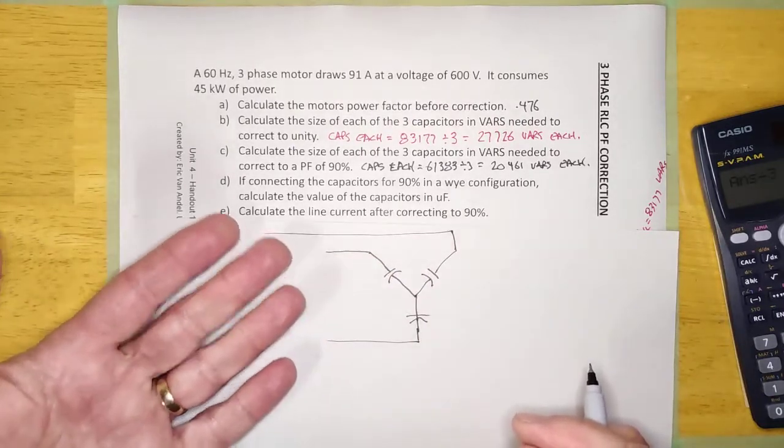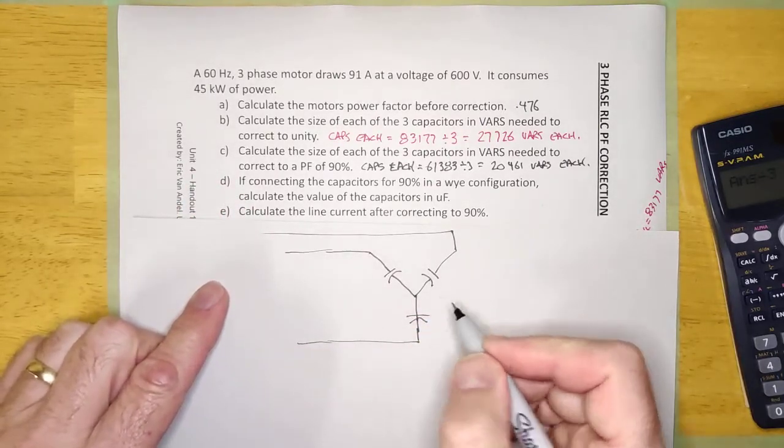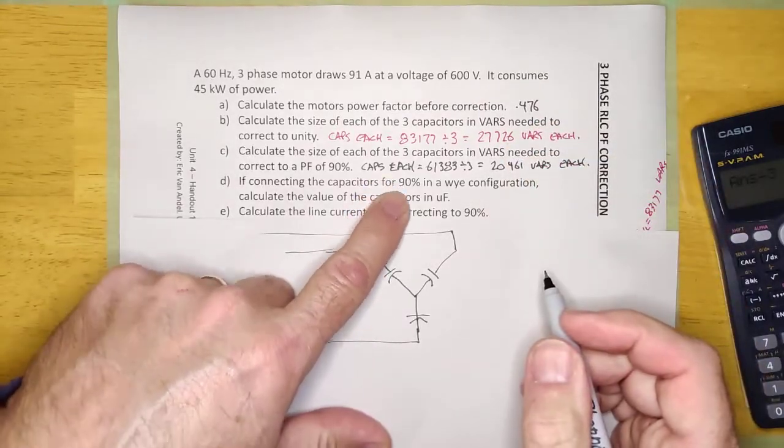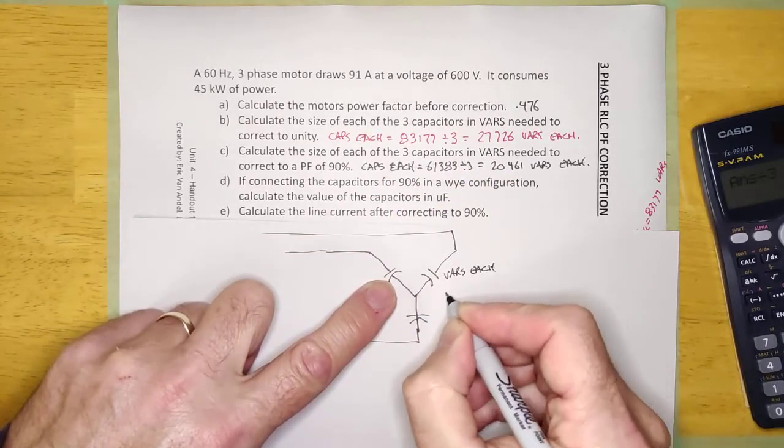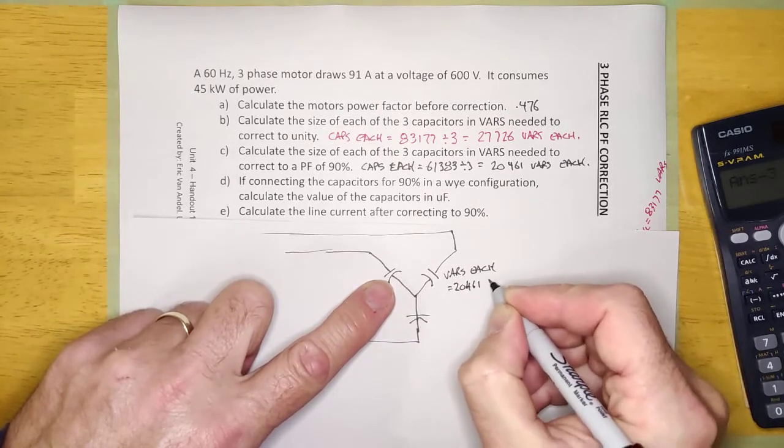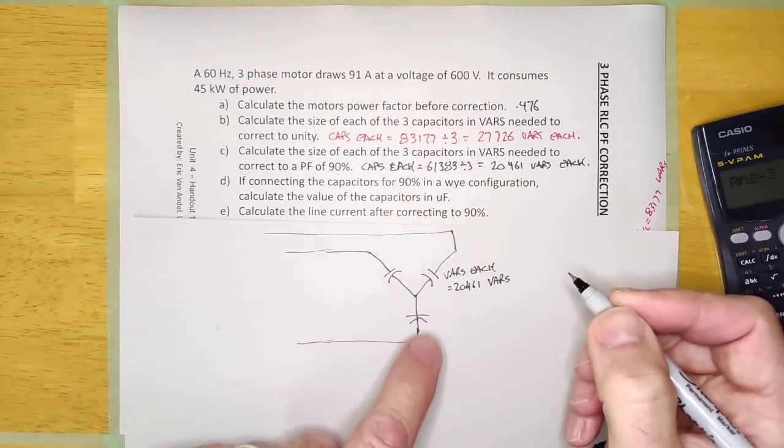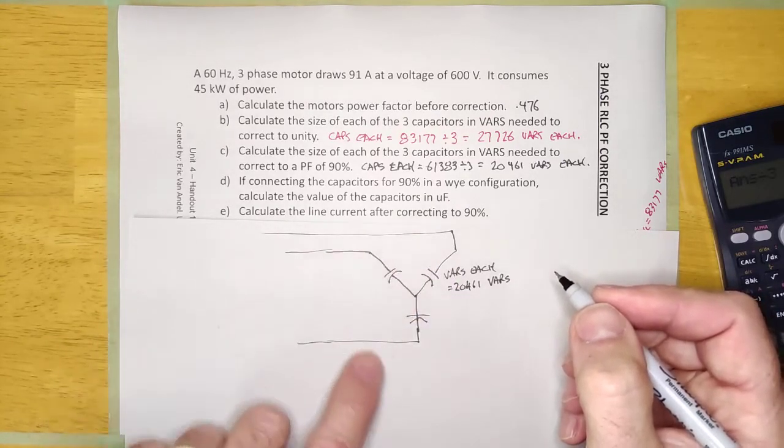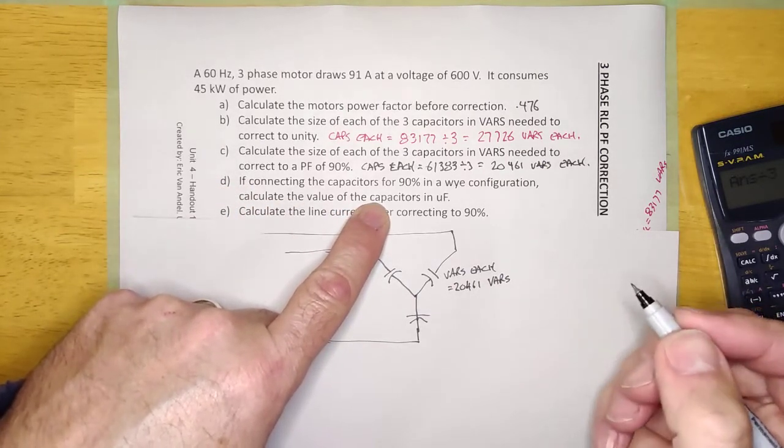It doesn't say if it's Y or delta, and it doesn't really matter. It's connected out here in parallel with it. Now, we just calculated that this thing here is 20.4, 2461 VARs. And so, that one's 20.4K VARs, all three of them. And it's asking, calculate the value of the capacitors in microfarads.